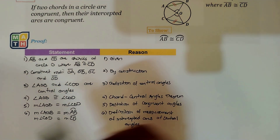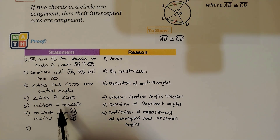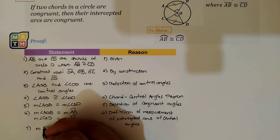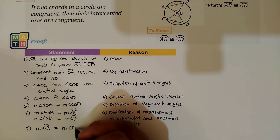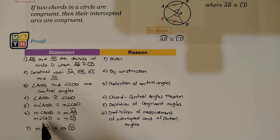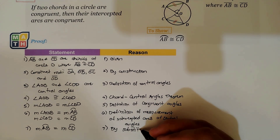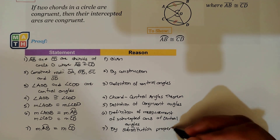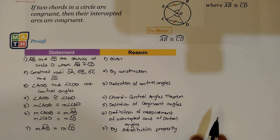Integrating steps five and six: since the measurement of angle AOB equals the measurement of angle COD, and we have those arc representations, we can say that the measurement of arc AB — which equals the measurement of angle AOB — is equal to the measurement of arc CD, which equals the measurement of angle COD. This is by the Substitution Property, since we have equalities and simply substituted their equivalent components.